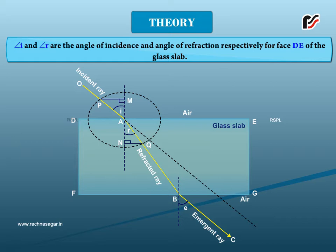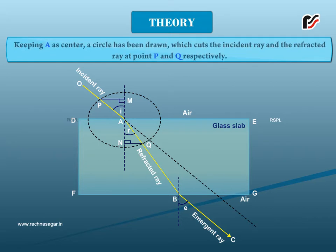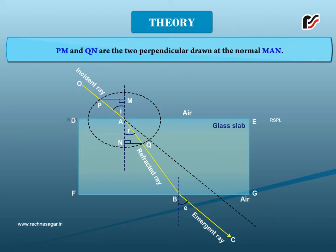Keeping A as center, a circle has been drawn which cuts the incident ray and the refracted ray at points P and Q respectively. PM and QN are the two perpendiculars drawn to the normal MAN.